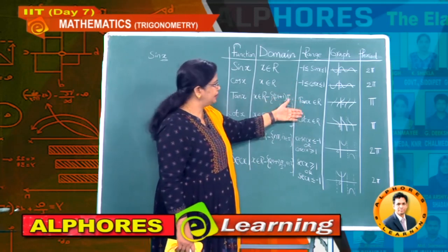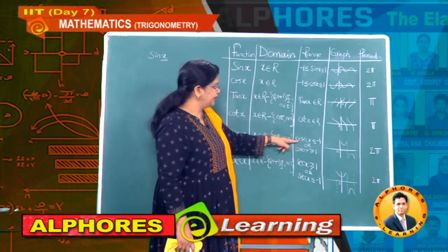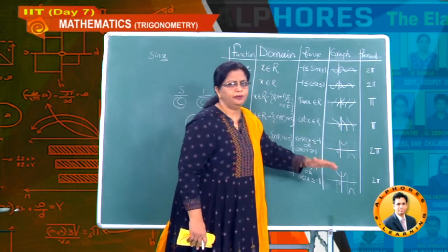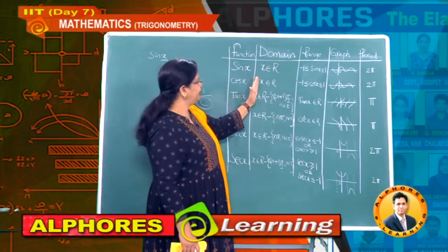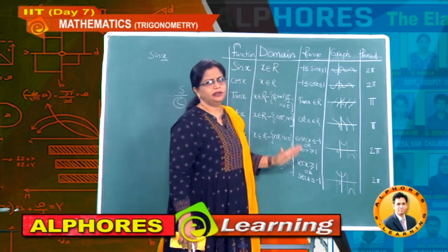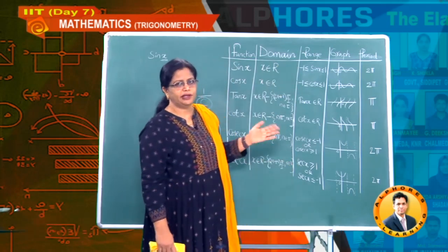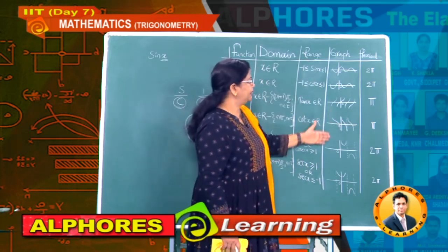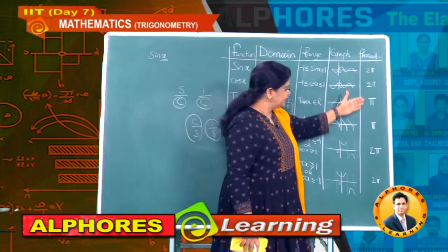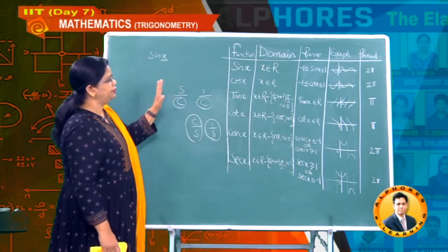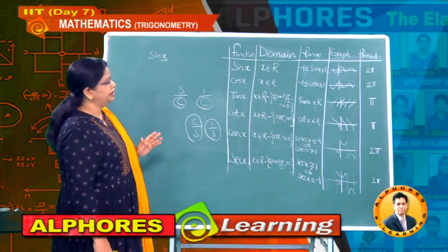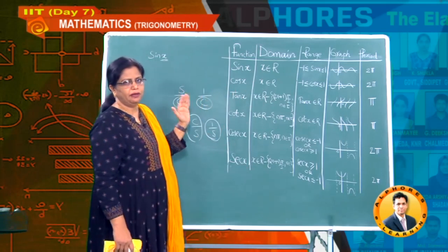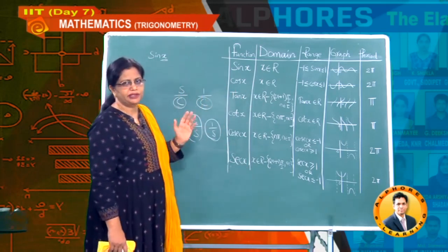For tan x, the range is all real numbers. For cosecant x, the graph is above plus 1 or below minus 1. Secant is the same — above 1 and below minus 1. So range means: from the domain values substituted, what values can those trigonometric functions take? These were observed from the shapes of the graphs. Also shown in this table are the periods of the corresponding functions. Range values and domain values are very, very important in many problems, so feed this tabular form completely into your mind.